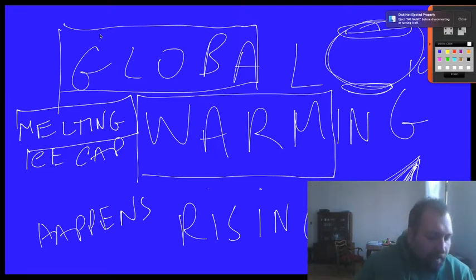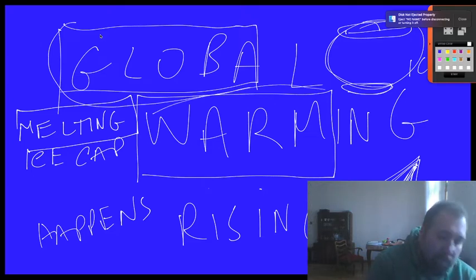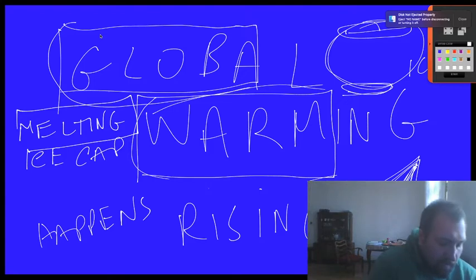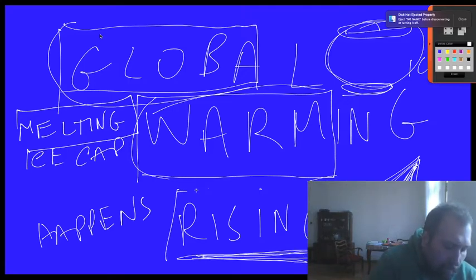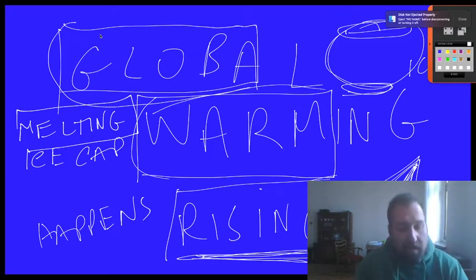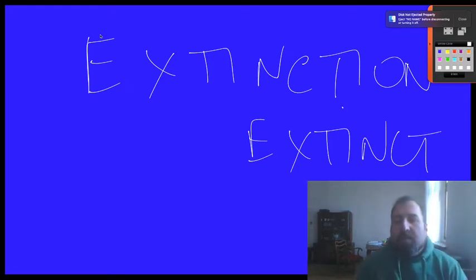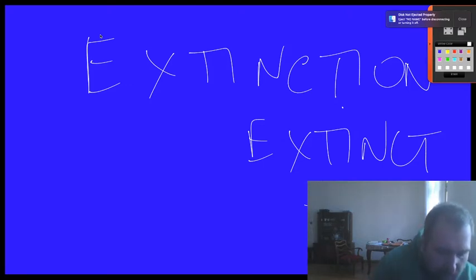These are words that could really be interesting to use during the matura exam if you pick the ecology card. The verb 'rising' — the rising of temperature — shows you are using good vocabulary. Now, another problem: if all these things happen, we could lead to 'extinction.' When animals are extinct — this is another connected problem. What does 'pollution' mean?